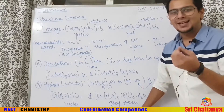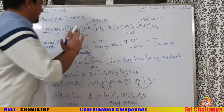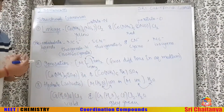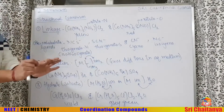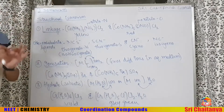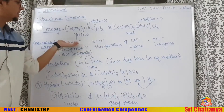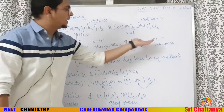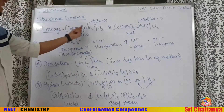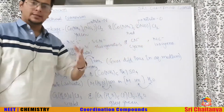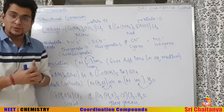What is a linkage isomer? The key hint is: for linkage isomerism to exist, there must be an ambidentate ligand. The ambidentate ligands in your course are NCS⁻ and SCN⁻ (one pair), CN⁻ and NC⁻ (carbon or nitrogen can be the donor atom), and NO₂⁻ and ONO⁻. Whenever there is an ambidentate ligand, that compound can show linkage isomerism.